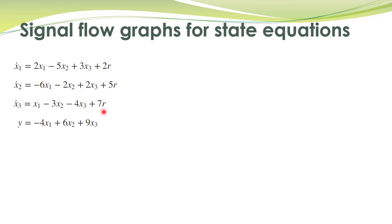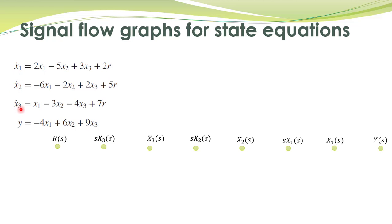We take one more example to demonstrate the same thing. We want to obtain signal flow graphs to represent these state equations and the output equation. Here again we have multiple signals: x1, x2, x3, and also their derivatives. We represent each of these signals with small nodes, and the signals are x1, x2, x2 dot, x3, and x3 dot.